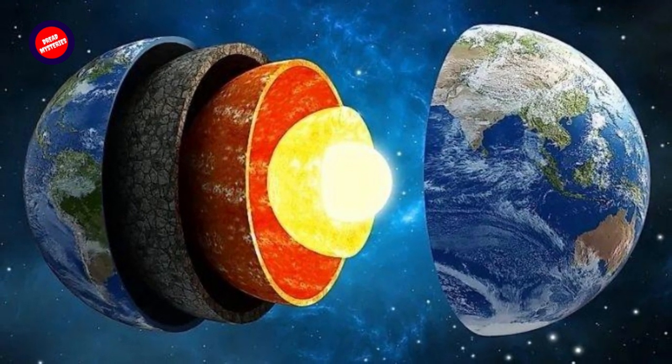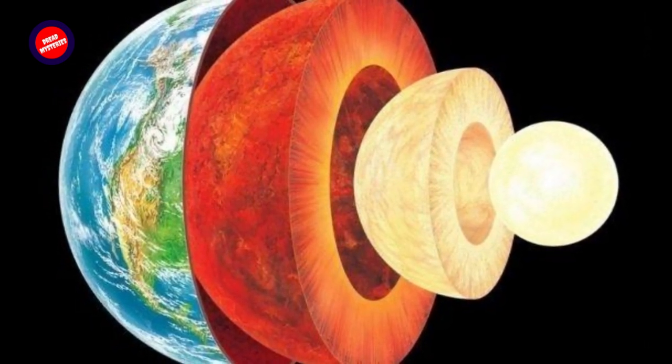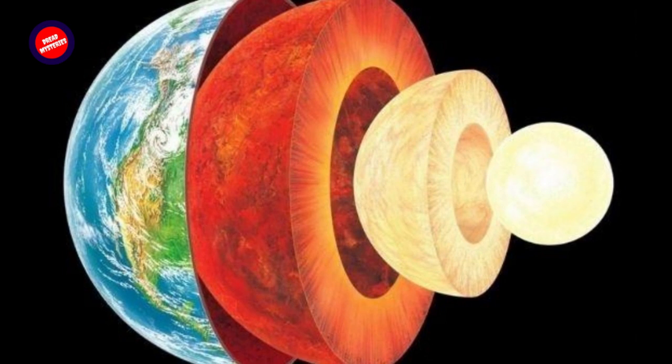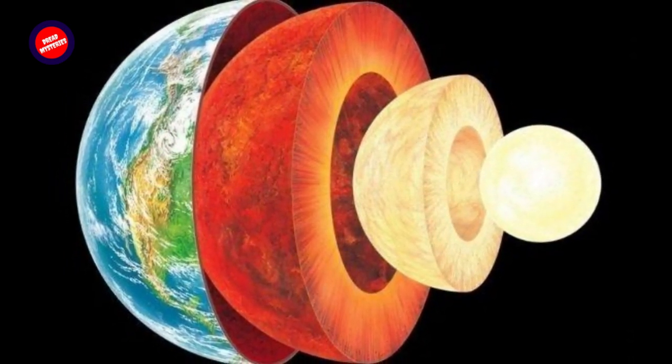Butler noticed that light waves struck some areas of the solid sphere in the Earth's inner core and returned, while others passed through. If the entire thing had been solid, these waves would have clashed with it and returned.